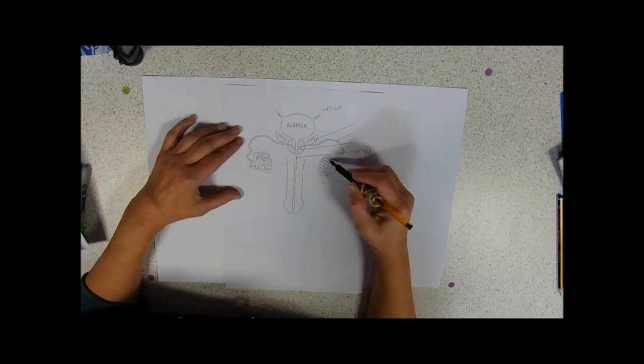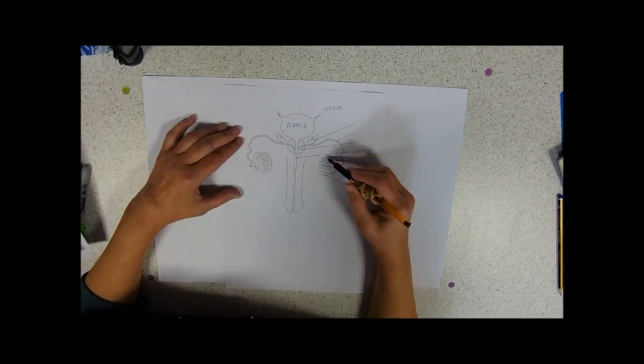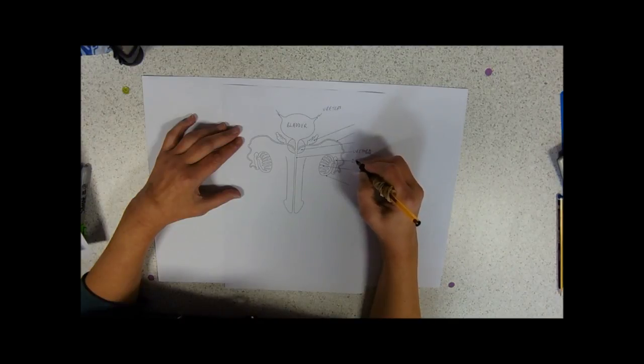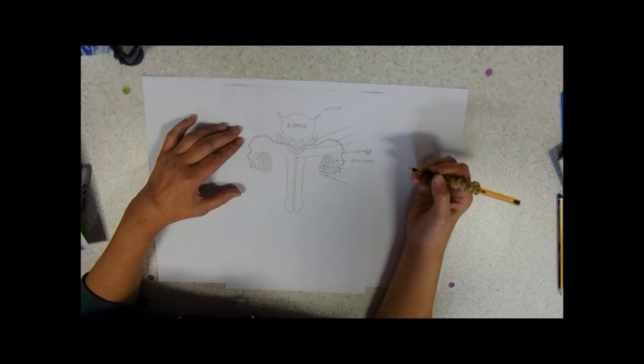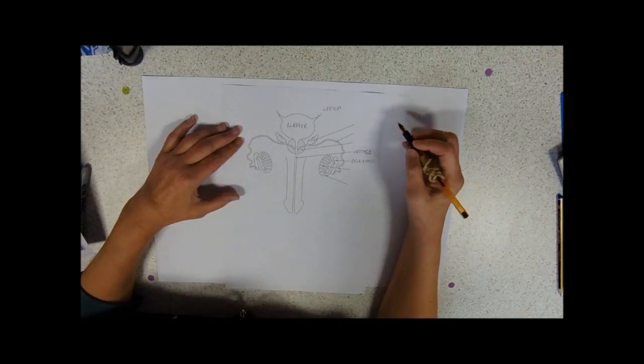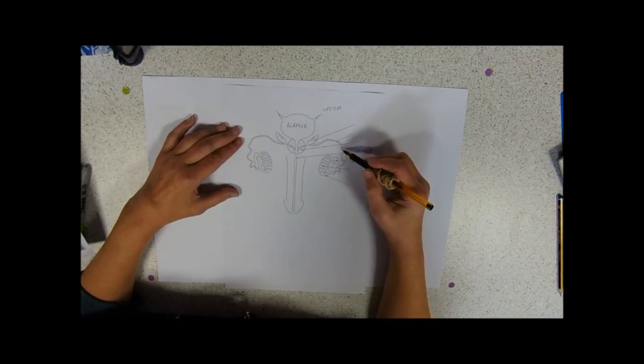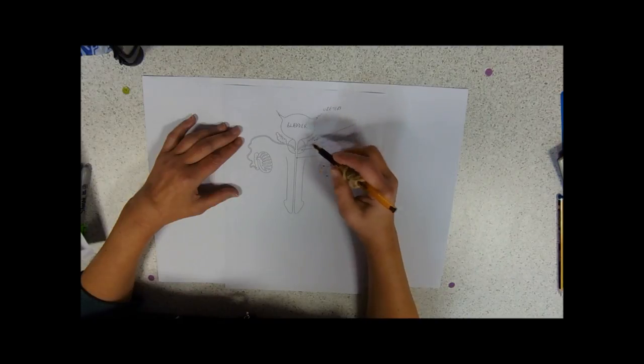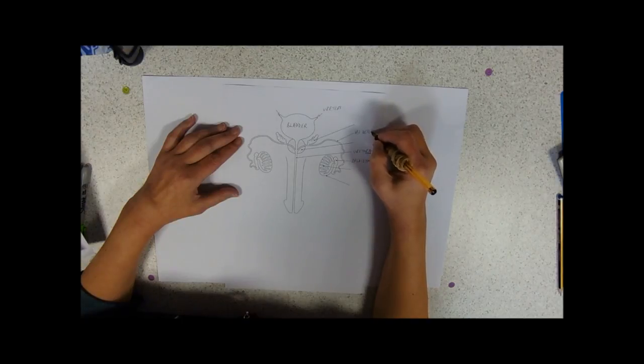So the spermatozoa are made in this area of the testes here which is composed, as we'll see in a minute, of a lot of little tubes, so these are little seminiferous tubules. The spermatozoa then drain away into this area here and this is called the epididymis. I think it's my least favorite part of the male reproductive system just because it's got a lot of sounds in it and one of them is a Y, which makes it really tricky to spell.